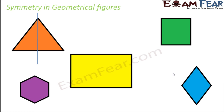Now exactly how many lines of symmetry a triangle has also depends on the properties of the triangle. For example, if you are talking about an equilateral triangle whose all three sides are equal, an equilateral triangle will have three lines of symmetry — this line, this line, and this line would each act as a line of symmetry because all three sides are equal.